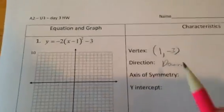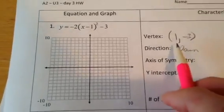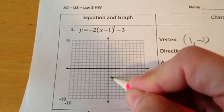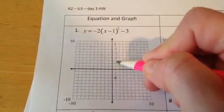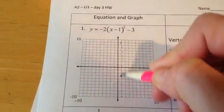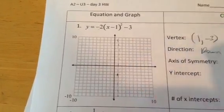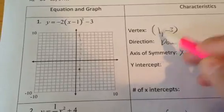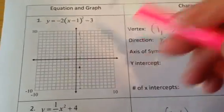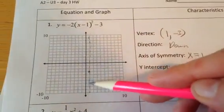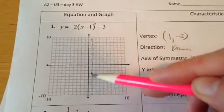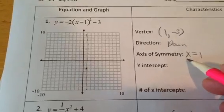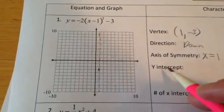And our axis of symmetry — if I start to plot this one, my vertex is 1, negative 3, and my parabola goes up and down, so my axis of symmetry goes straight through the vertex. The equation for your axis of symmetry is always x equals whatever the x-coordinate of the vertex is. That line has a lovely equation of x equals 1.